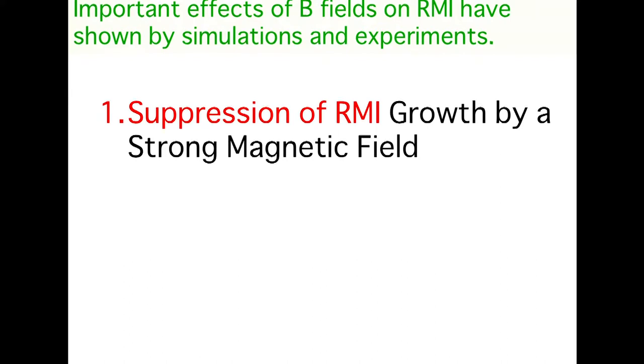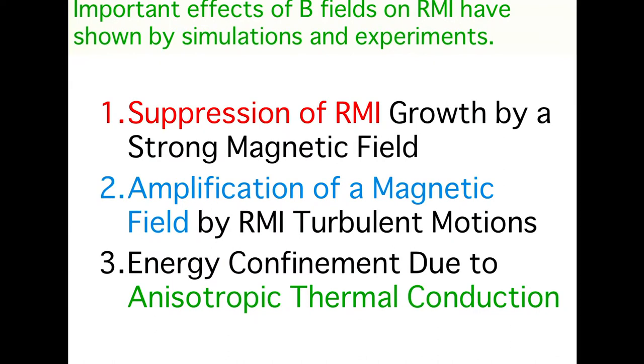There are three important effects of the magnetic field on the instability shown by simulation and experiment: first, the suppression of Richtmyer-Meshkov instability growth by a strong magnetic field; second, the amplification of magnetic field by turbulent motion; and third, the energy confinement due to anisotropic thermal conduction. I'll talk about these three effects in this talk.